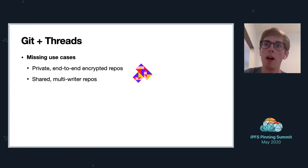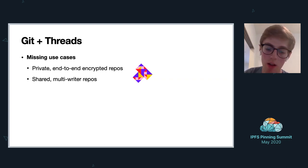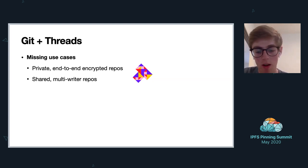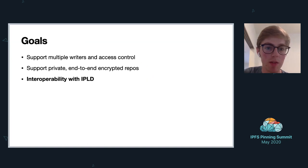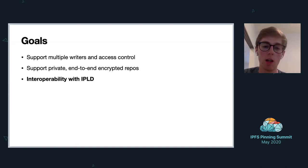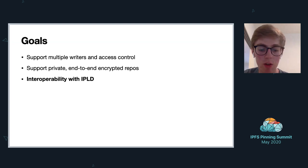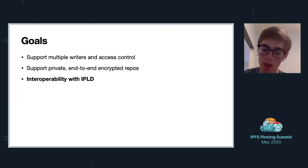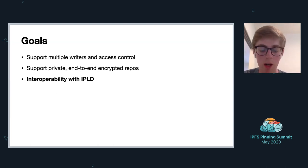We're looking at building basically a Threads-backed Git remote to meet these use cases. The goals include supporting multiple writers and supporting end-to-end encryption. A big thing I ran into was how to support and be interoperable with IPLD — there's a lot of tooling out there for the Git raw IPLD codec.